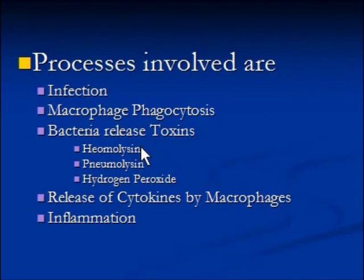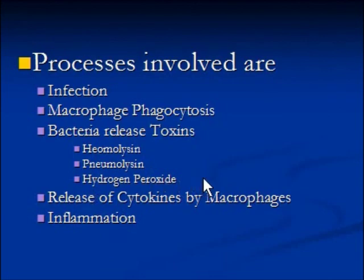The bacteria damage host cells by releasing toxins. Hemolysin is a toxin produced and released by some bacteria including Streptococcus pneumoniae, which damages red blood cells in order to release hemoglobin, which is then used by bacteria as a nutrient. Hydrogen peroxide is another toxin that creates holes in host cells to release their contents, which is also used by bacteria as food. Hydrogen peroxide also damages the surrounding tissue.